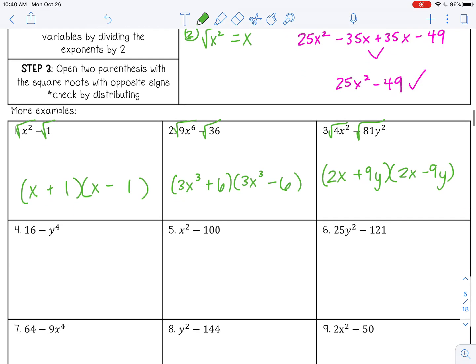Number 4. The square root of 16 is 4. The square root of y to the 4th is y squared. Number 5. The square root of x squared is x. The square root of 100 is 10.